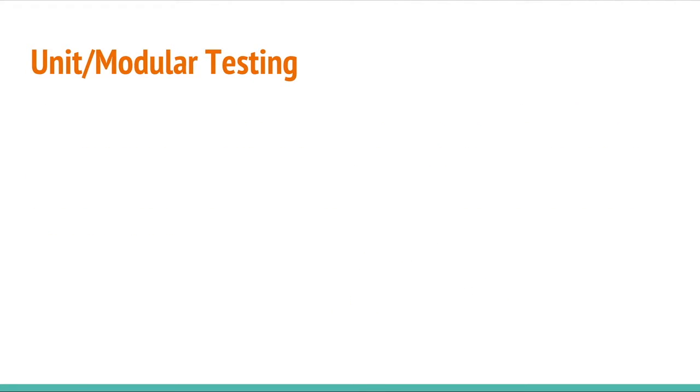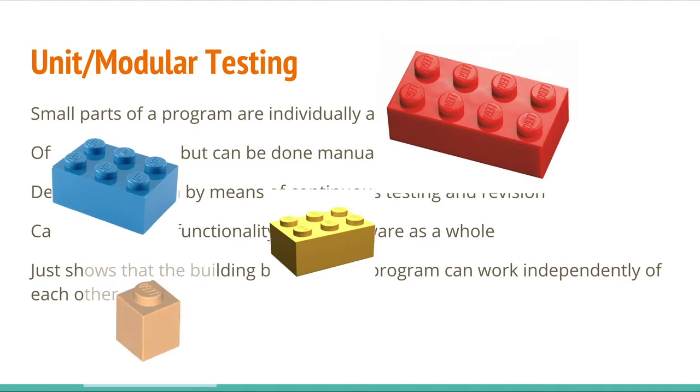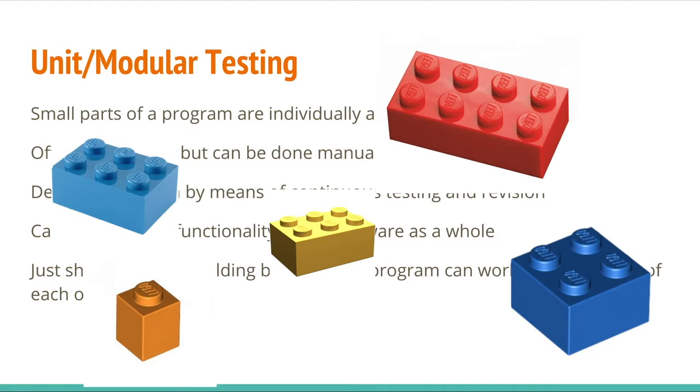So, unit or modular testing. Small parts of a program are individually and independently tested. And these are called units or modules. And it's often automated, done by a computer, but it can be done manually. And it is a detailed approach by means of continuous testing and revision. However, it cannot verify the functionality of the software as a whole. So, it does not show how the program works together. It does not show how cohesive the program is. It just shows that the building blocks of the program can work independently of each other.